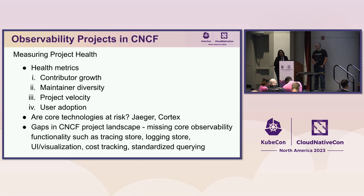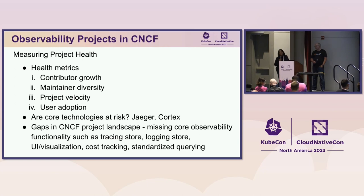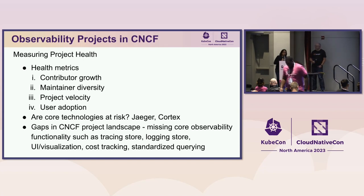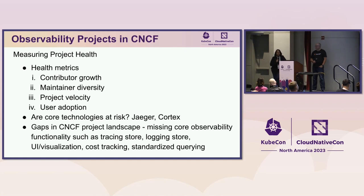This goes back to a core question many users ask: are these core technologies being developed in the open source space healthy or are they at risk? A couple of projects where the dynamics of contribution have changed significantly in the last few years are Jaeger and Cortex. Jaeger is a core project in the tracing space — it has supported visualization for traces, storage, and analysis. Over time, many of Jaeger's maintainers have started contributing to OpenTelemetry, so they don't have enough time to also contribute to Jaeger.